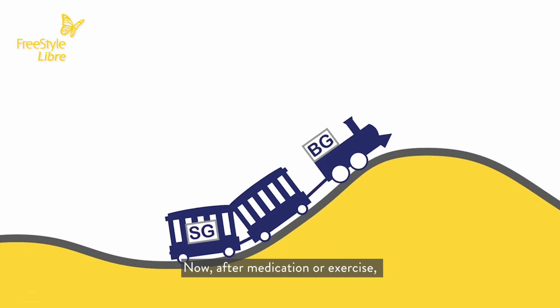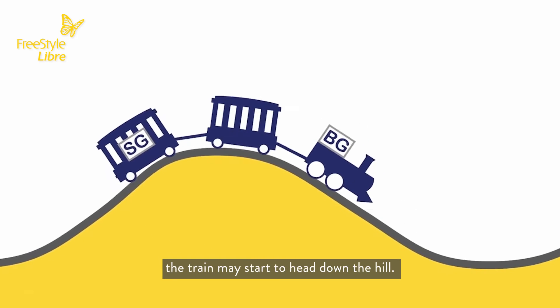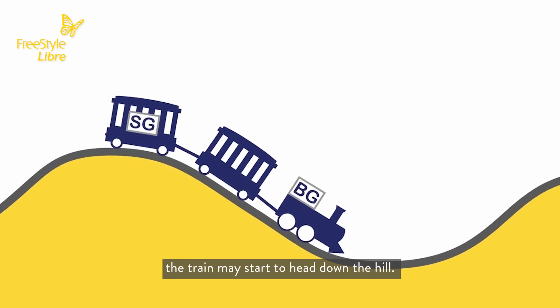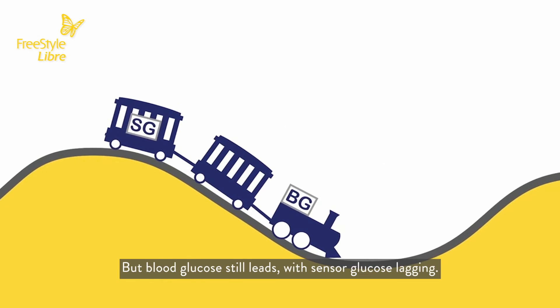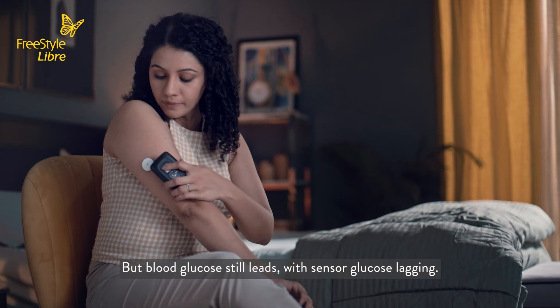After medication or exercise, the train may start to head down the hill. But blood glucose still leads, with sensor glucose lagging.